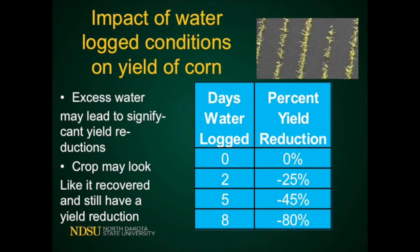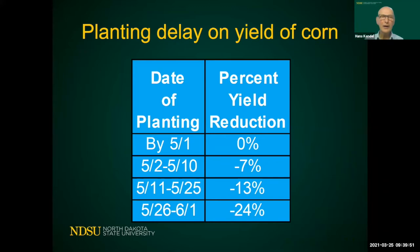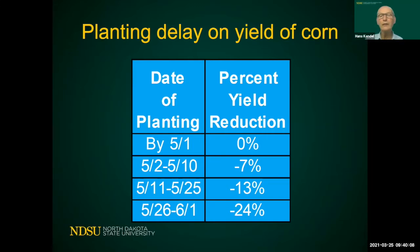If waterlogging conditions last longer, we typically see that the reduction in yield is larger. We have a reduction if plants are standing in water. And for the benefit of reaching maximum yields, we also want early planting. If we delay planting from the 1st of May, we see a reduction in percent yield potential for corn.